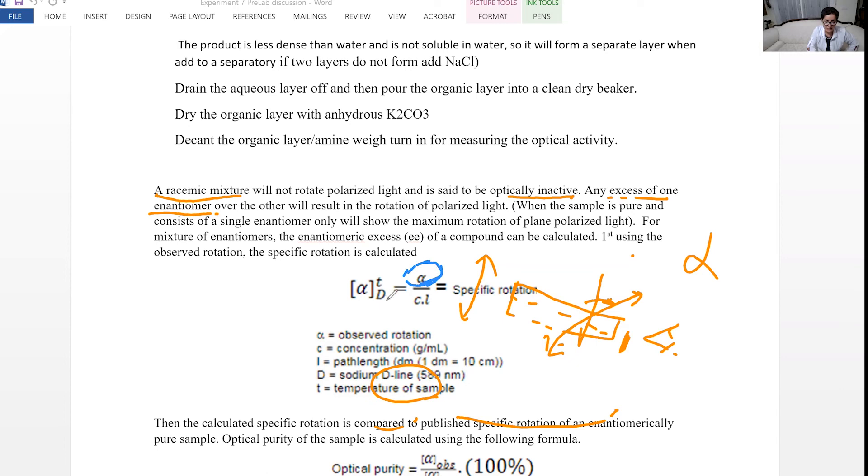You can calculate specific rotation. Because observed rotation depends on concentration and depends on the length of the cell that you are using. If it's one decimeter or two decimeters, then you can calculate the specific rotation.